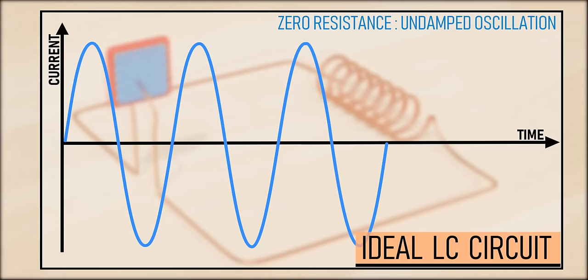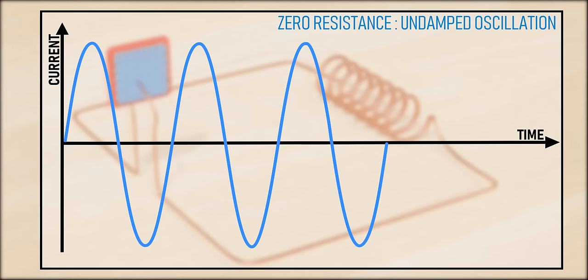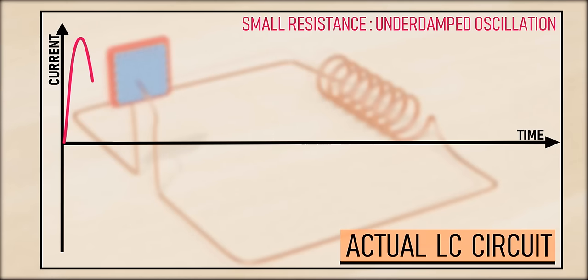However, practically, we can never achieve such ideal behavior due to the presence of resistance. The resistance causes energy decay in the form of heat. This means that in a practical circuit, the oscillations will die out eventually.